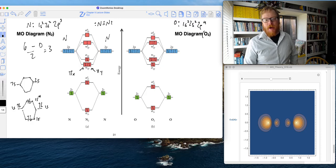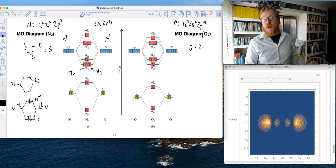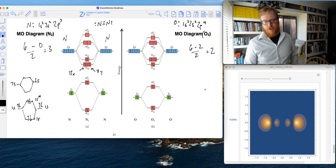But remember, only six of those are bonding electrons. Two of these up here are anti-bonding electrons divided by two equals two. So what's the deal with oxygen here?